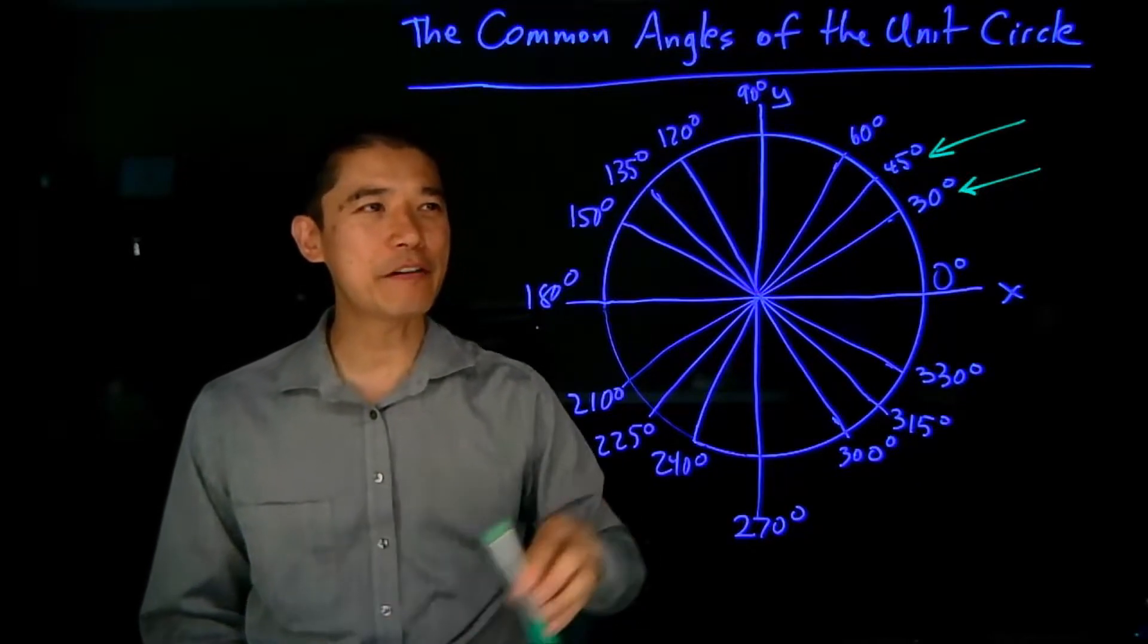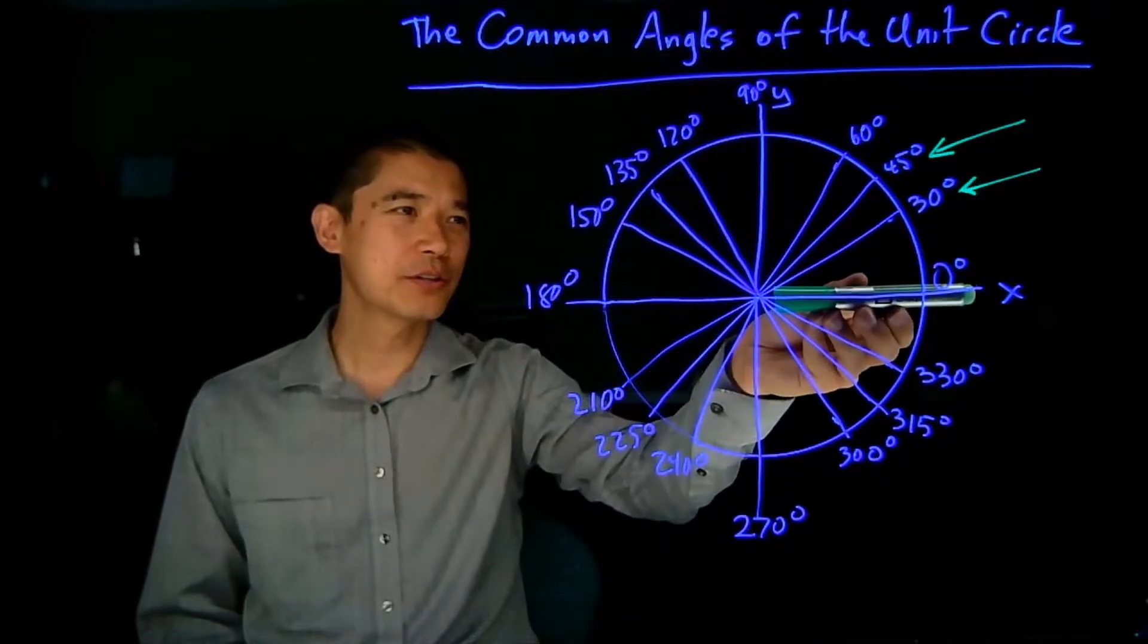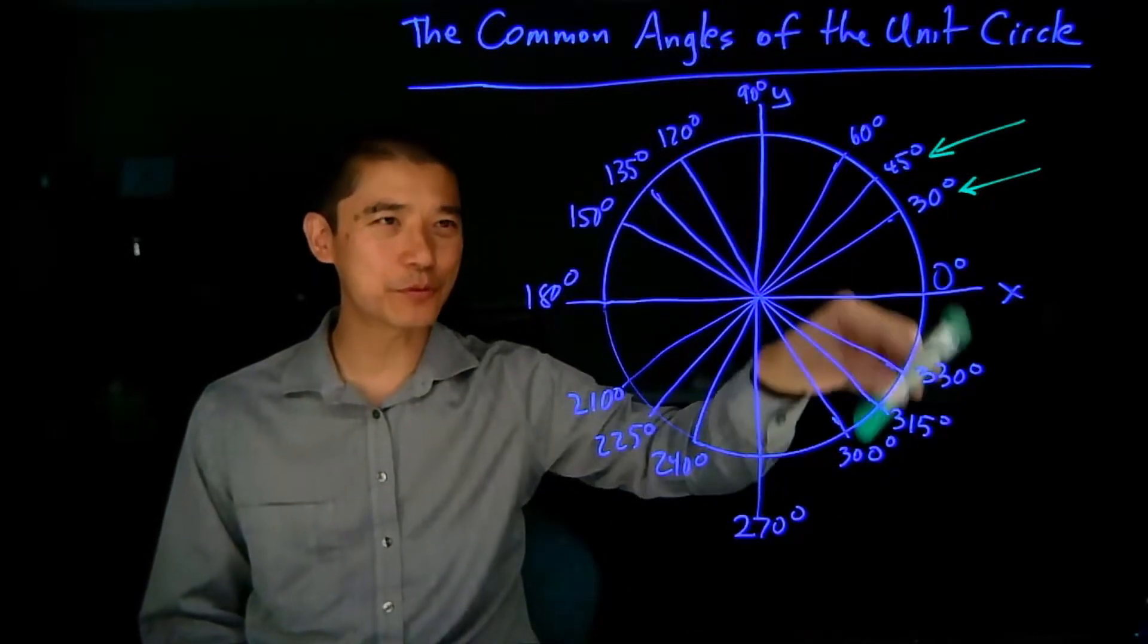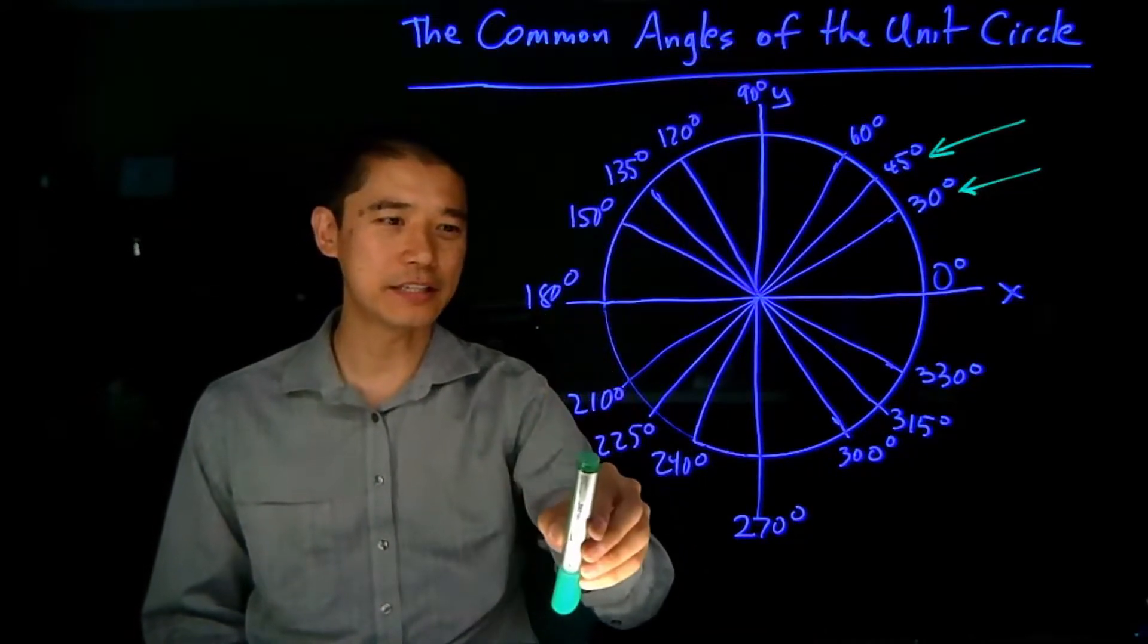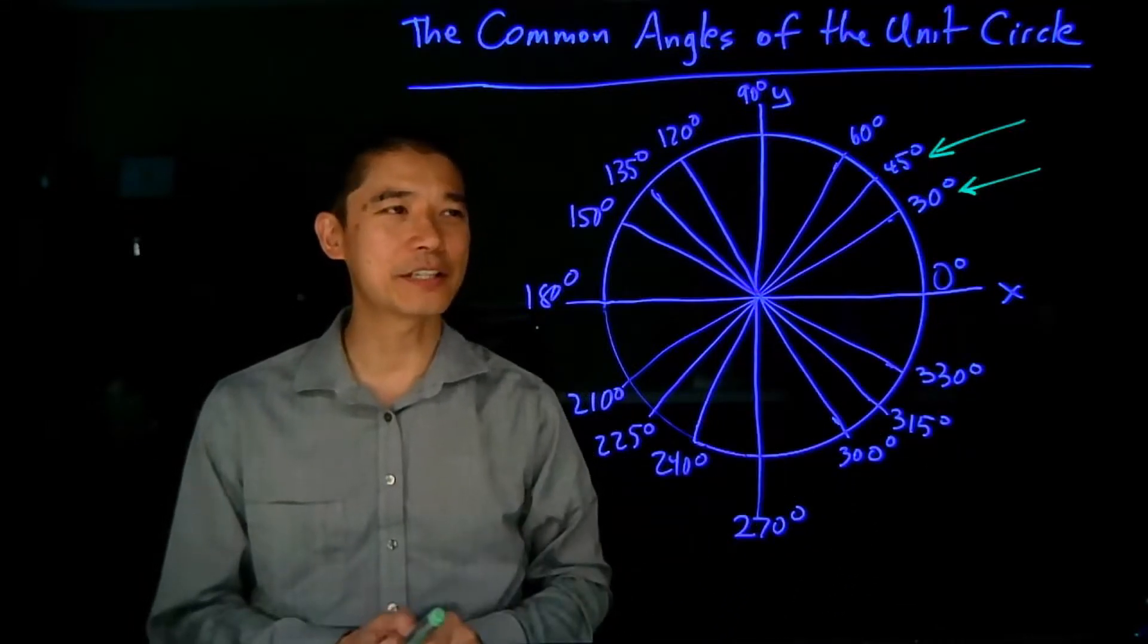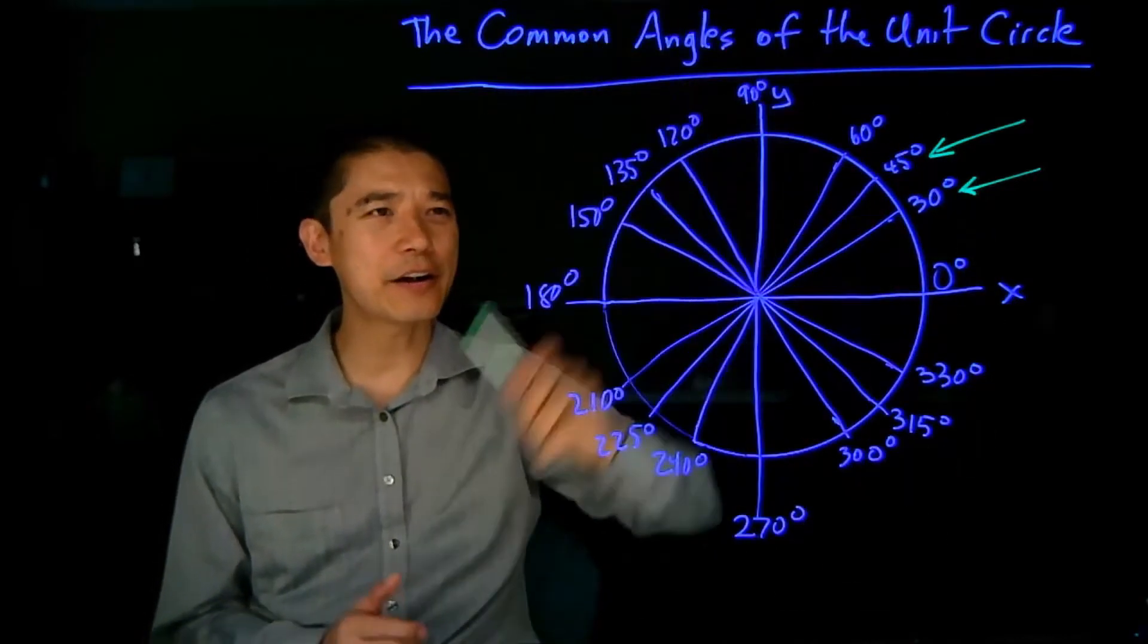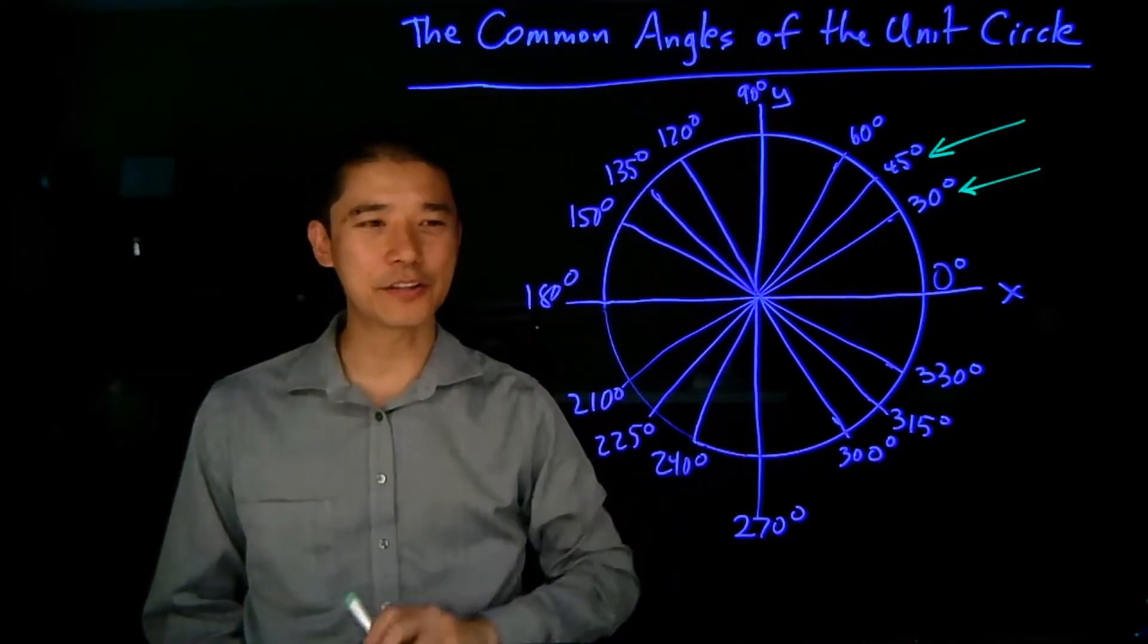You can do the same thing with the 45 degree angle. The 45 degree angle is half of a 90 degree angle. So 45, 90, and just add multiples of 45 going around here: 135, 180, 225, 270, 315, and 360. This gets you the entire way around the circle using the 45 degree increments, and that will get you the rest of the values on this chart.